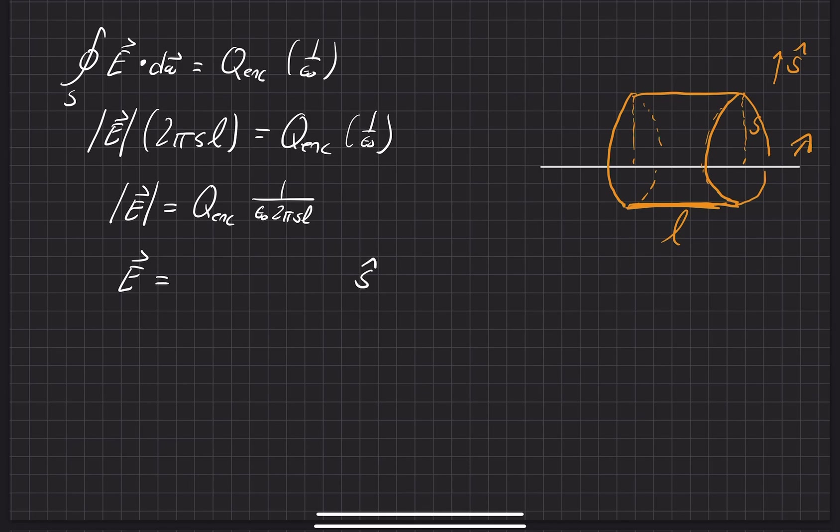And the next thing that we're going to really focus on is the Q enclosed. If we look over here, the Q that's enclosed by this Gaussian surface is equal to lambda times the L. I'll write Q enclosed explicitly. It's equal to the lambda times the length that's enclosed by that Gaussian surface, which of course is L, which we just wrote here.